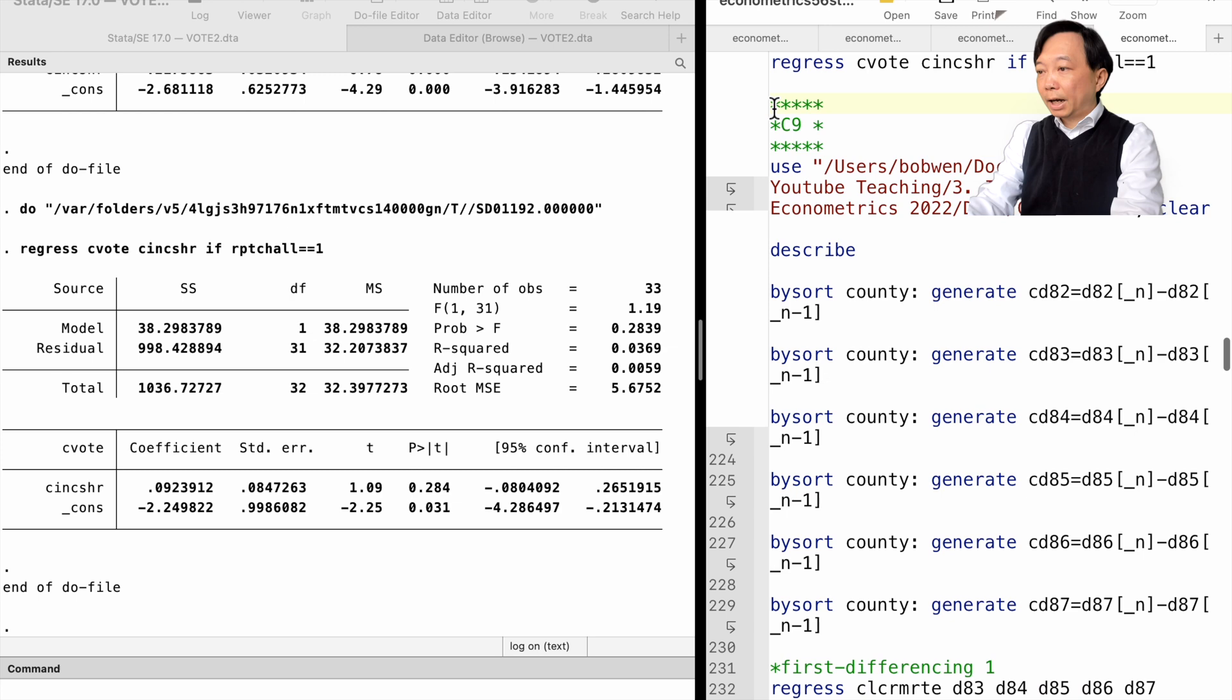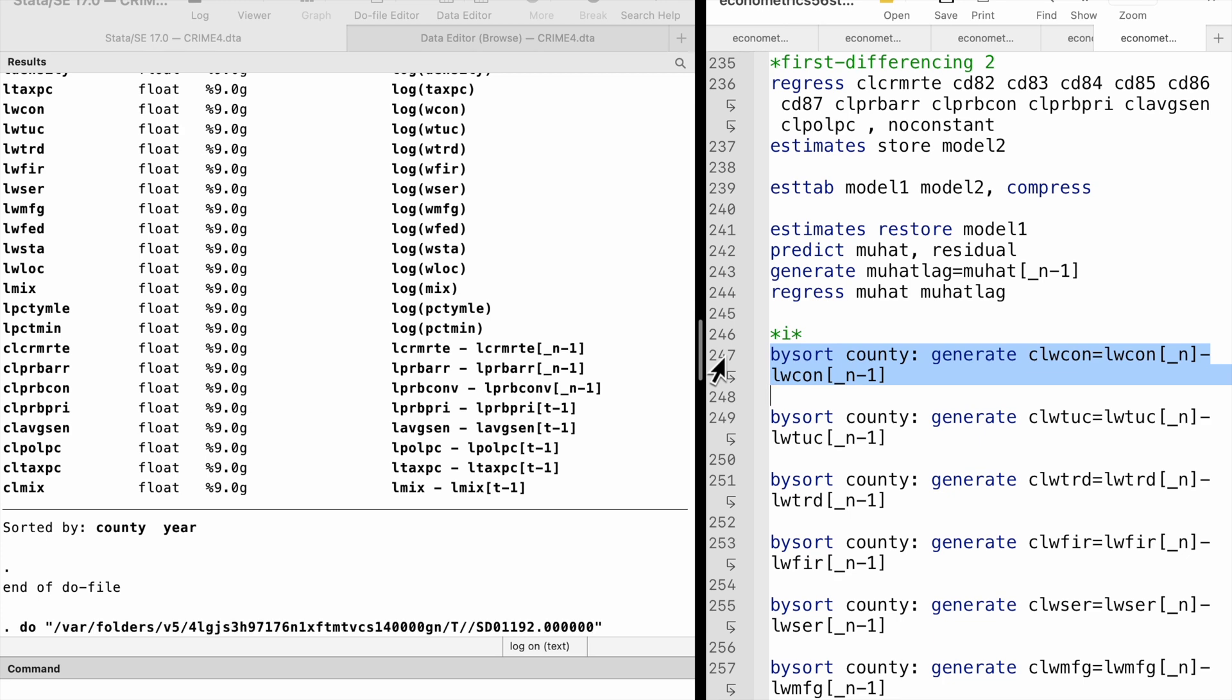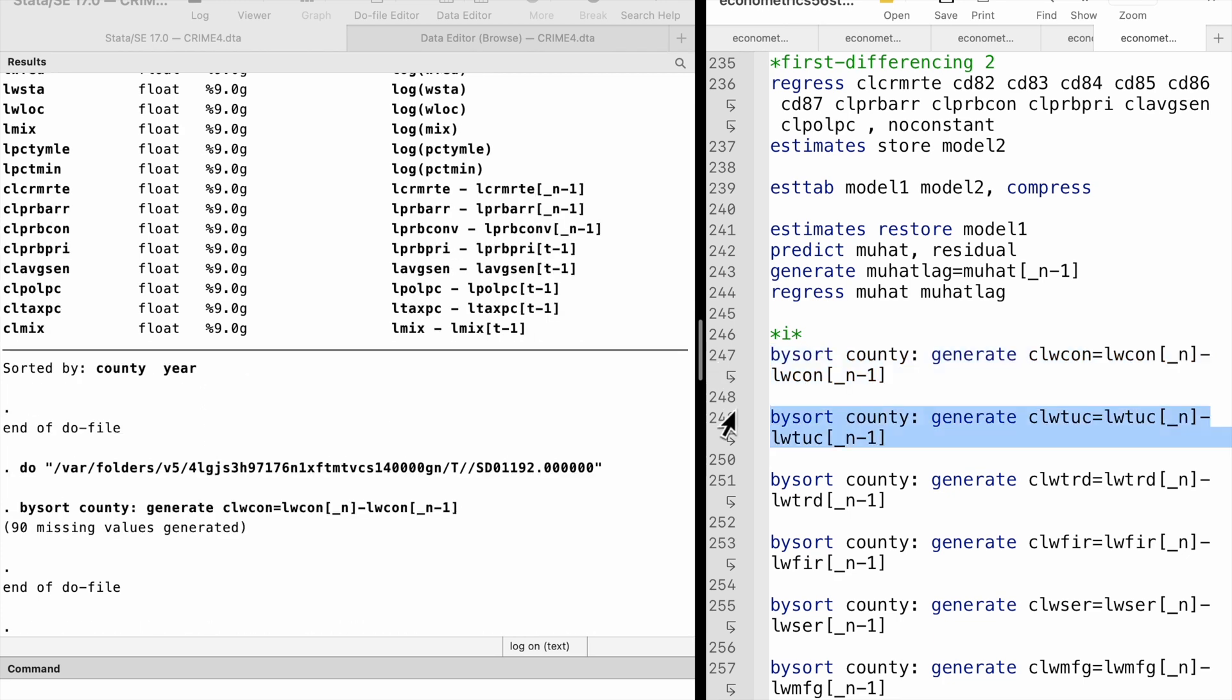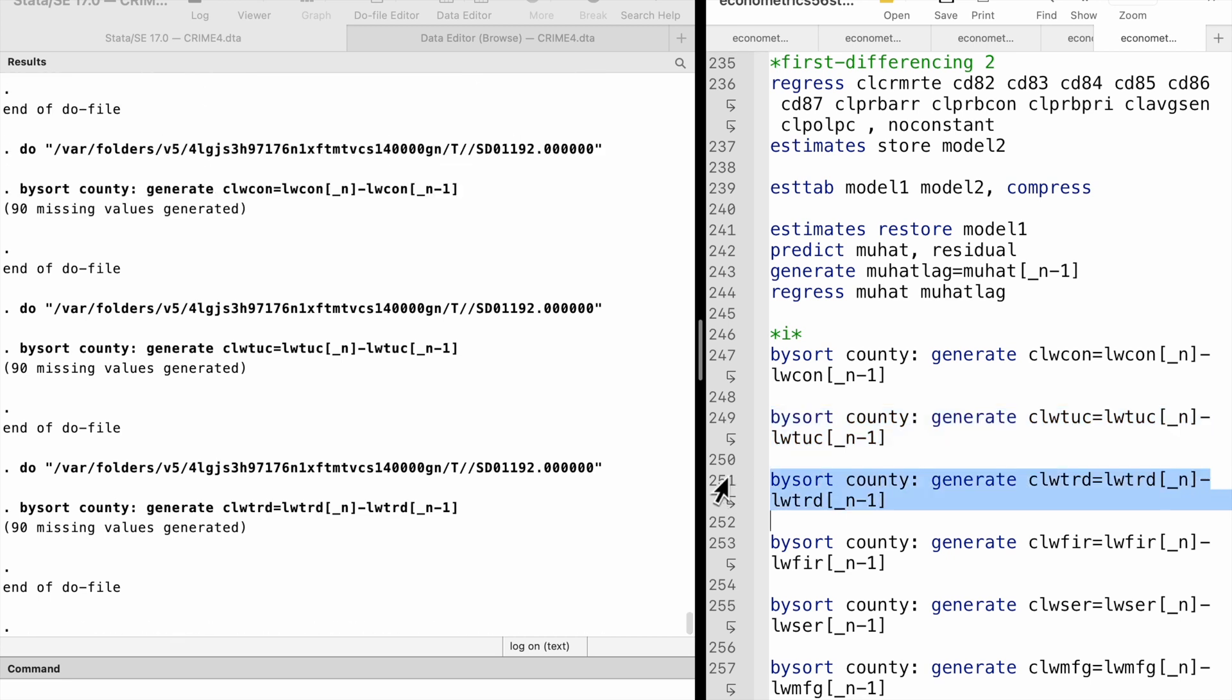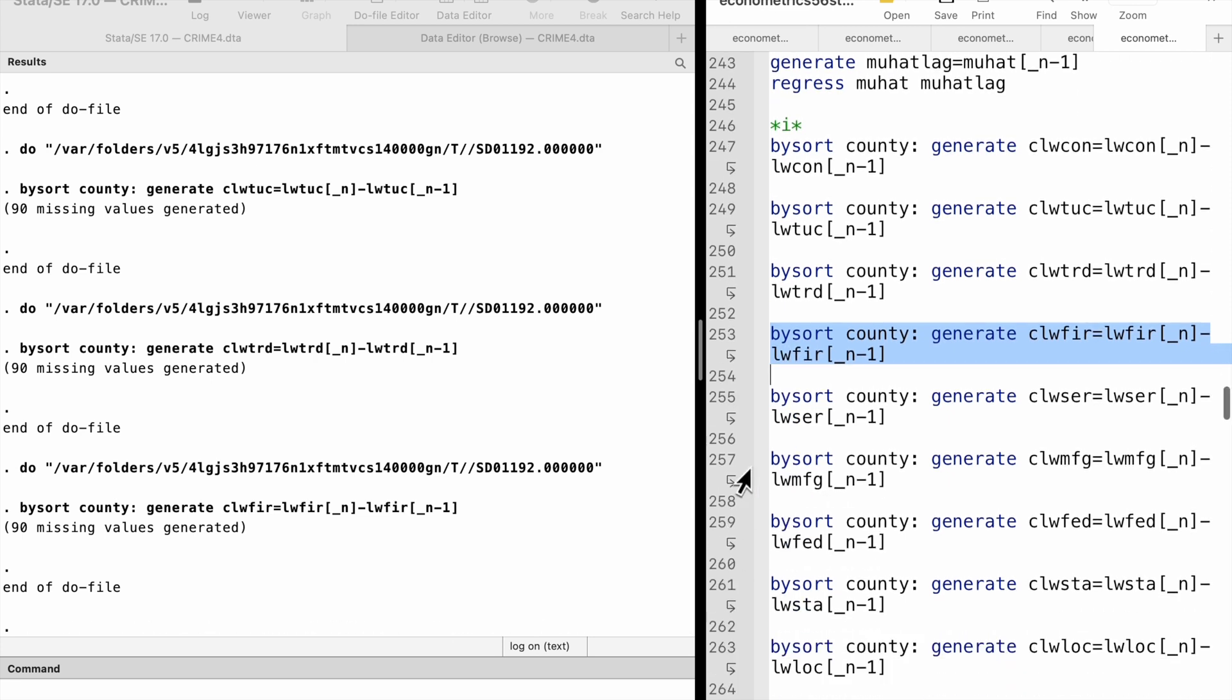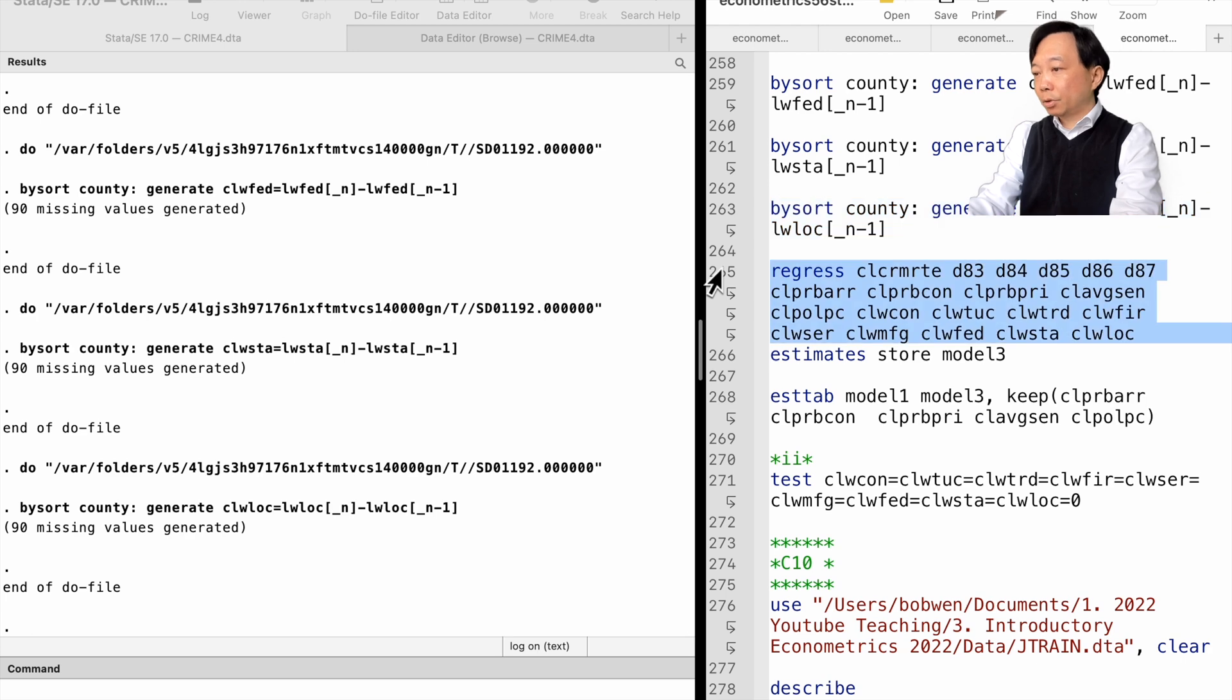We generate the 9 first differenced log wage variables and then add them to the model.